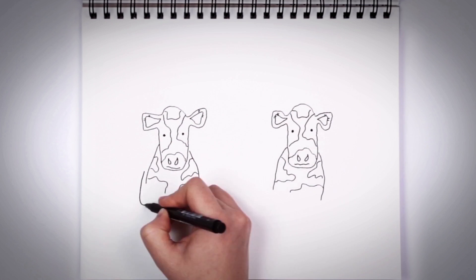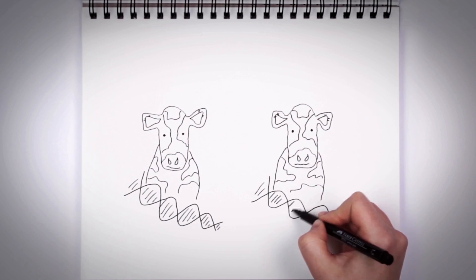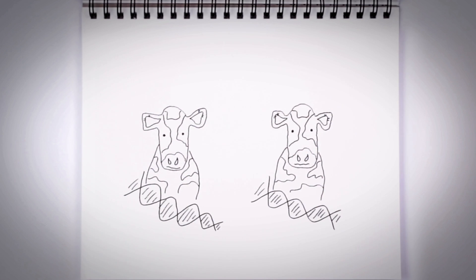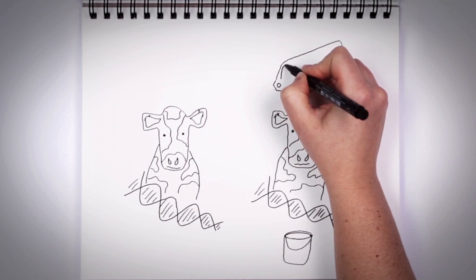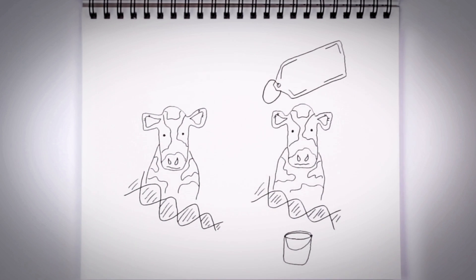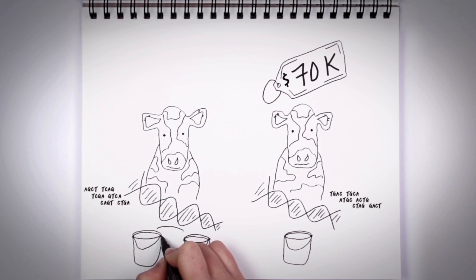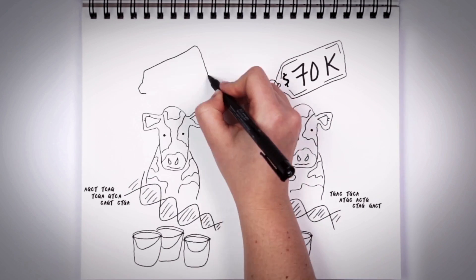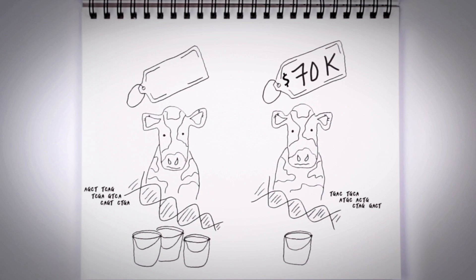For example, in dairy cows, certain genes control specific traits like milk production and fat content. Using genomics to look at the DNA of newborn calves has revolutionized the dairy industry. Producers can now determine which calves have the genes related to the traits they want. Cows with a higher genomics score produce more milk and demand higher prices at auction, sometimes as much as double.